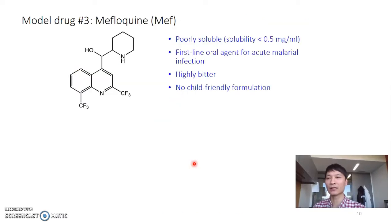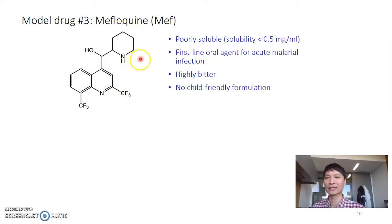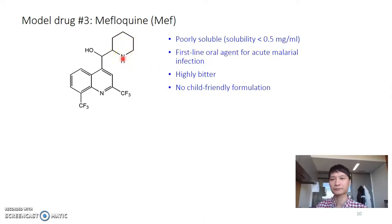The final drug example is Mefloquine. As you can see from the structure, it's a poorly water-soluble compound. The solubility is about 0.5 milligrams per milliliter. It's a weak-base drug, so it has a significant delivery problem.